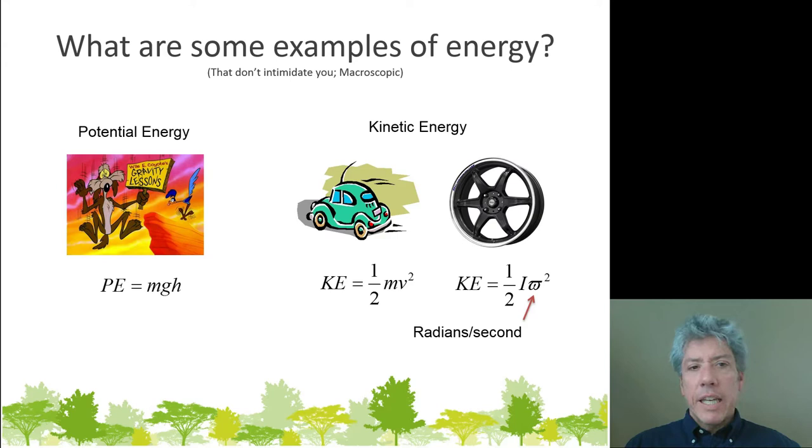You can even quantify it. The potential energy that the bike or car has at the top of the hill is MGH—the mass of the vehicle multiplied by the acceleration of gravity times its height. Here we have Wile E. Coyote learning his own gravity lessons. Kinetic energy is one-half mv squared. If you know the mass of a vehicle moving and its velocity, then half the mass times the square of the velocity gives you the kinetic energy.